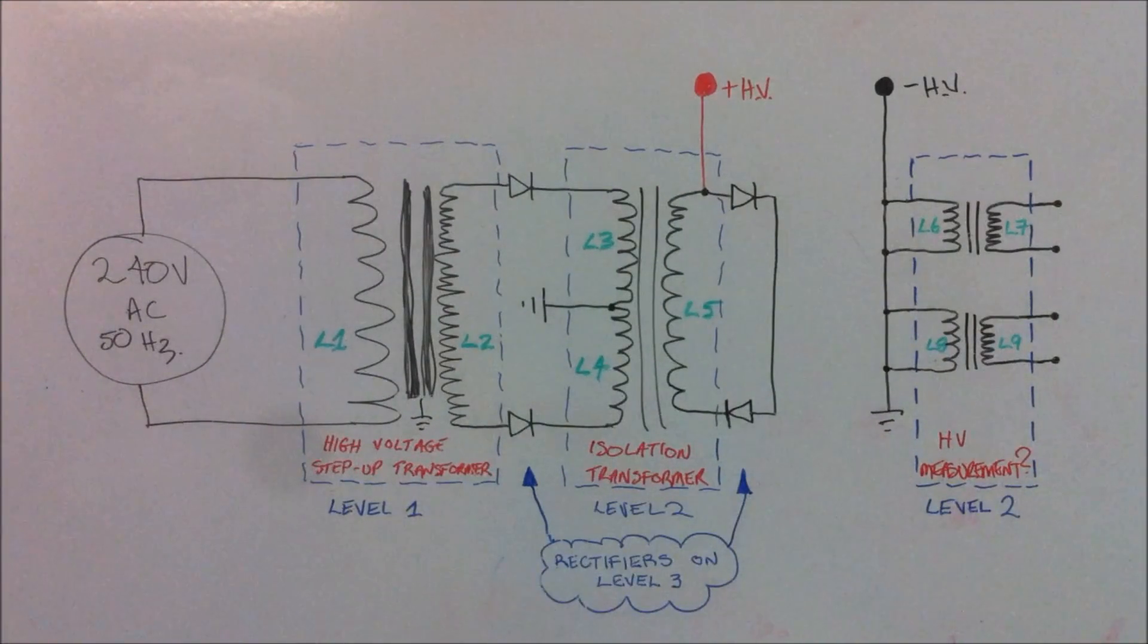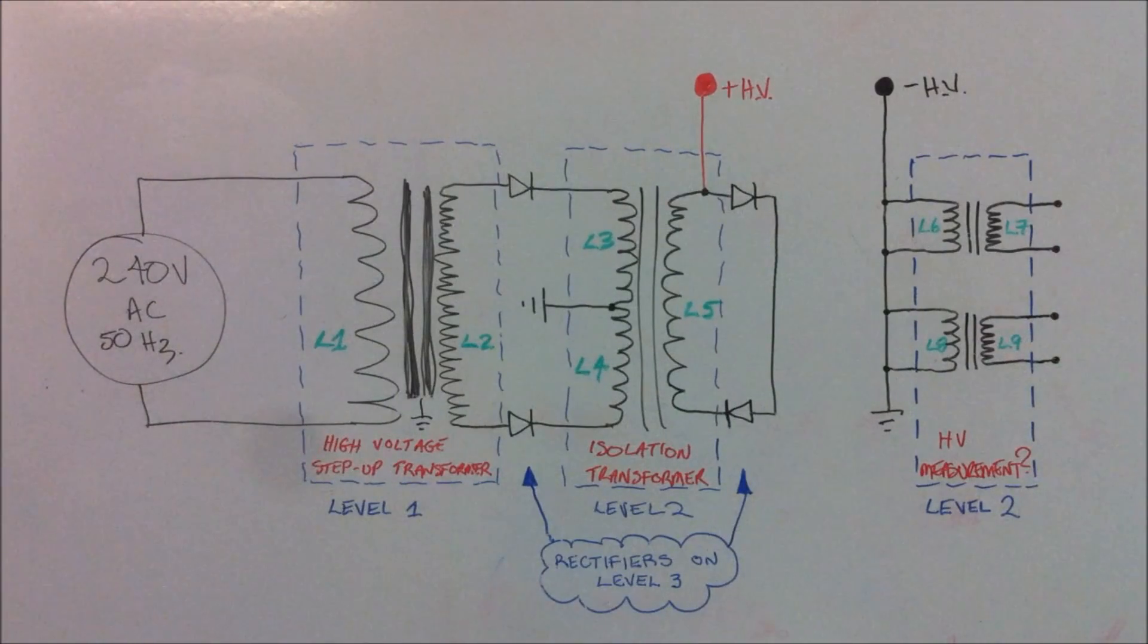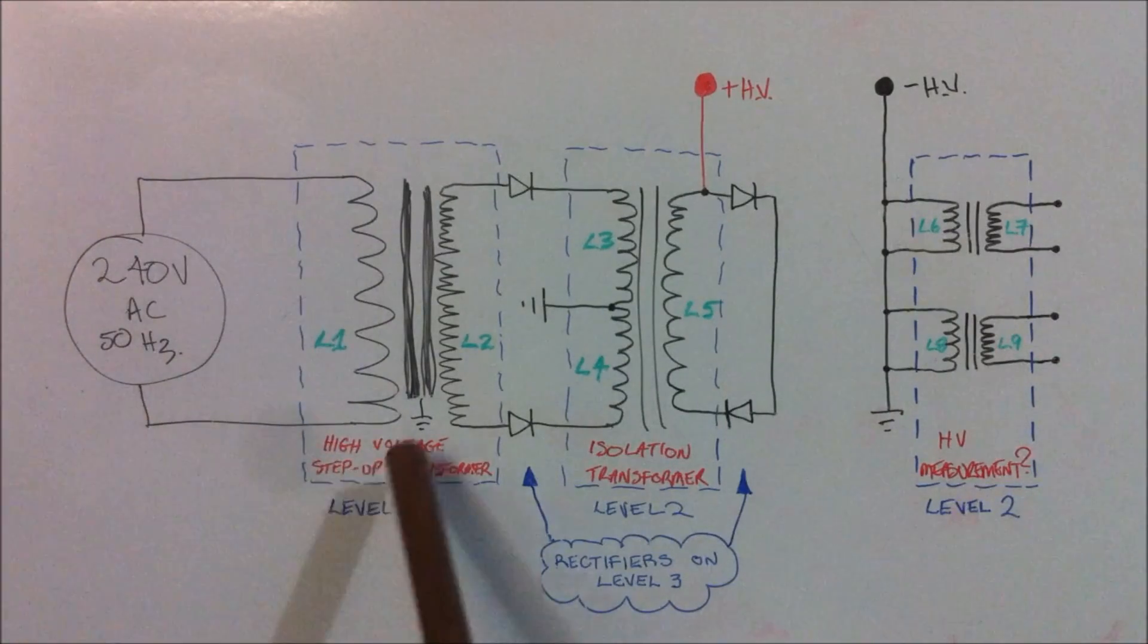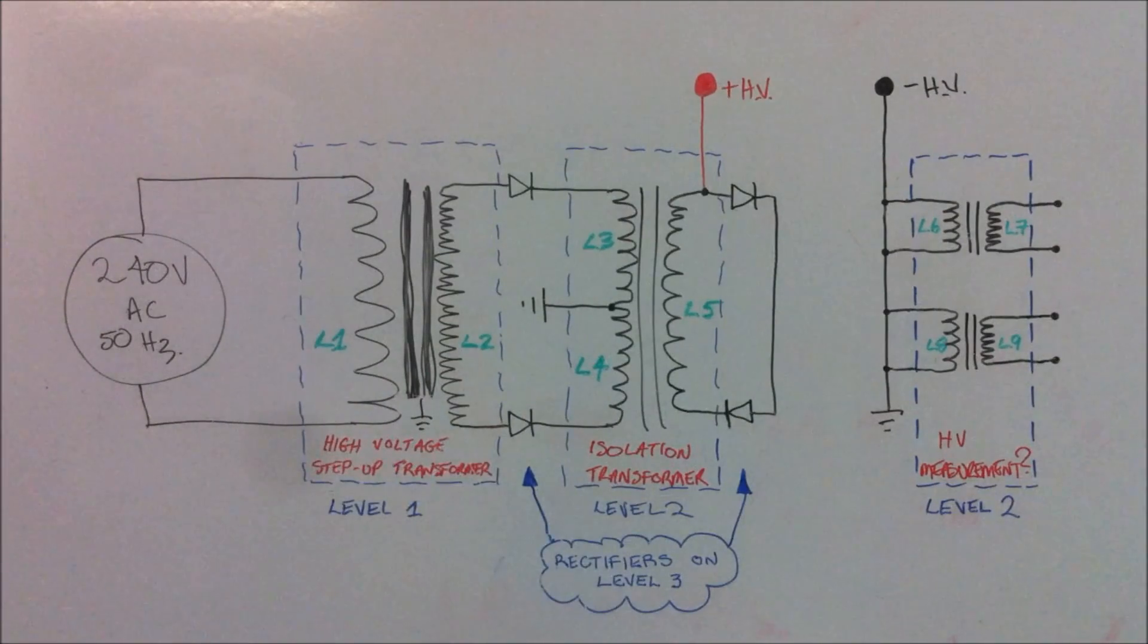We're starting off with the 240 volts AC 50 Hertz single phase input power going into the first transformer consisting of the L1 and L2 on the first level, which is the bottom level of the main unit.